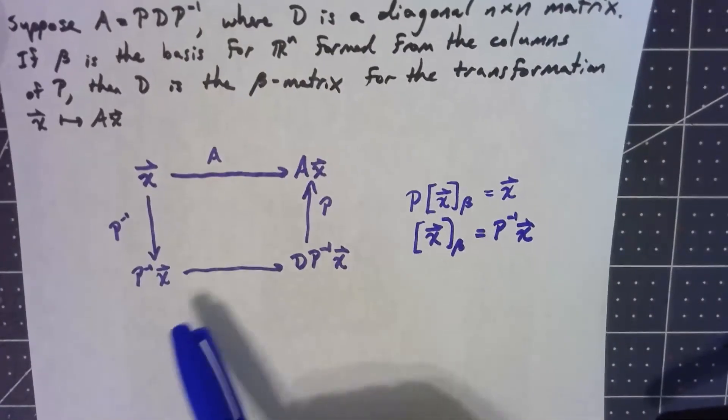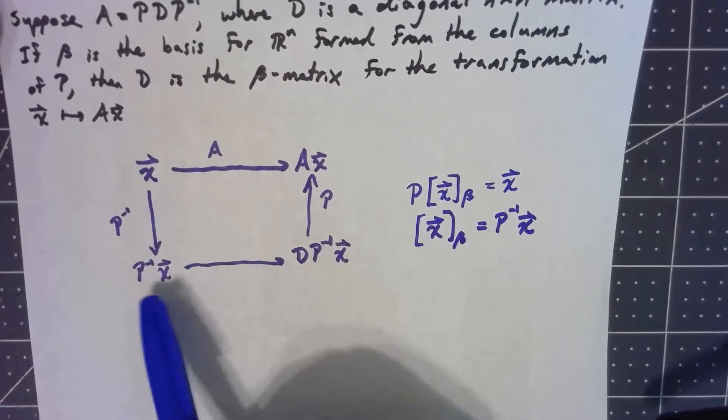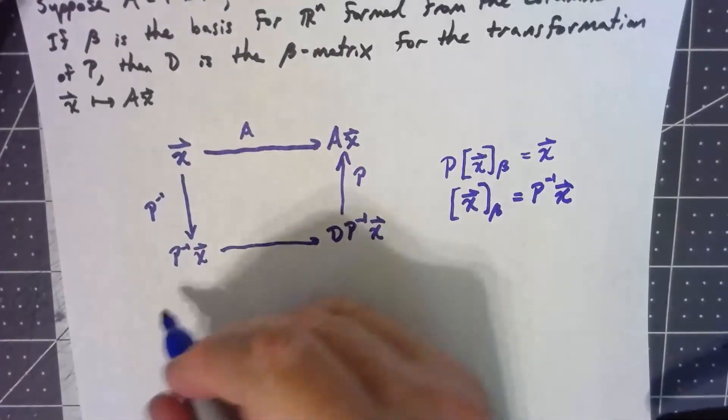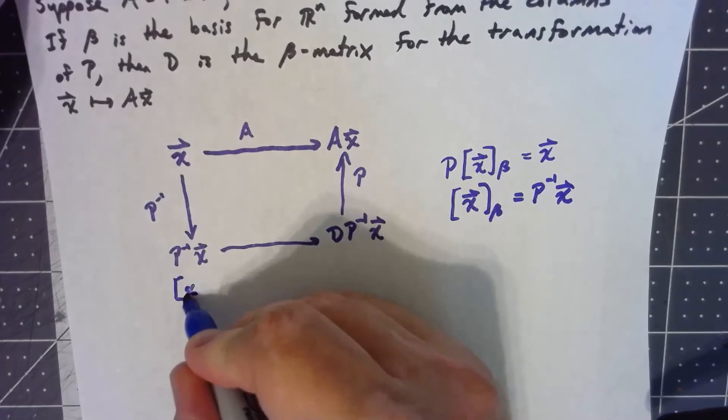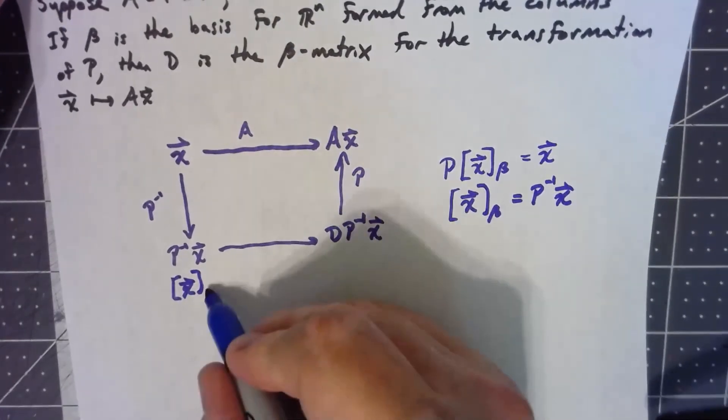So hold on. This is saying that going from here to here, this is creating the coordinate vector for x with respect to our basis.